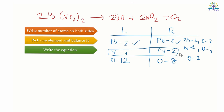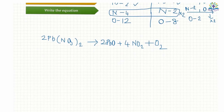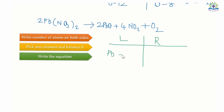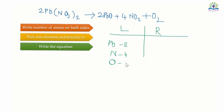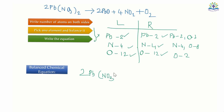Here the nitrogen atoms on the left and right side are not balanced. If I multiply 2 to the nitrogen on the right side, I'll have to multiply 4 to the compound on the right side. So right now, the number of atoms of lead on the right side is two, nitrogen is four, and oxygen is two plus eight plus two, which is 12. As we can see, both the atoms on the left and right are currently balanced. So our final equation is 2Pb(NO3)2 → 2PbO + 4NO2 + O2.